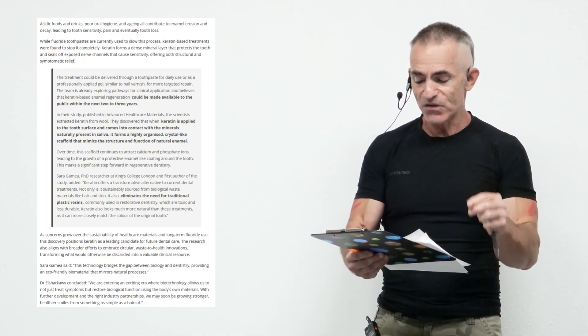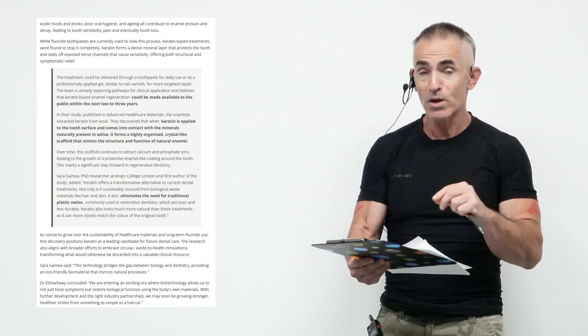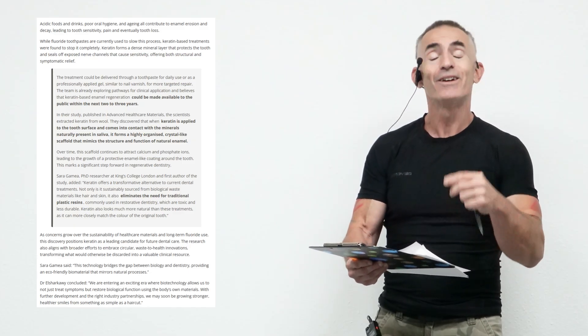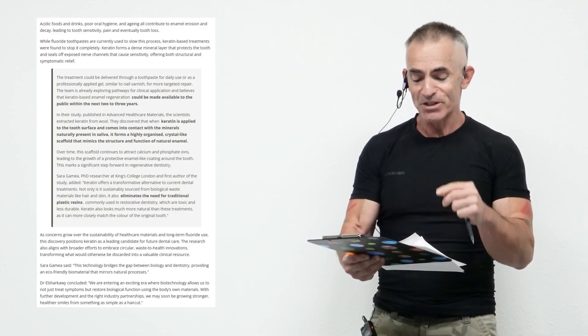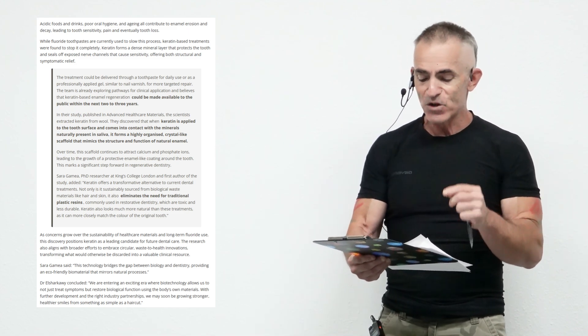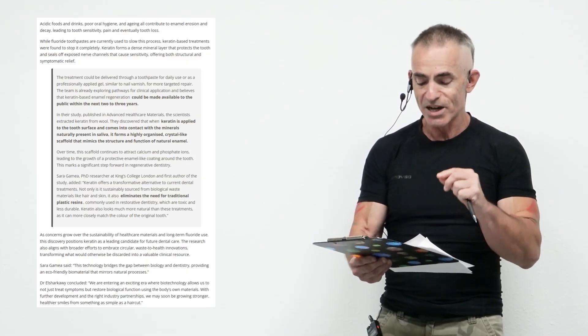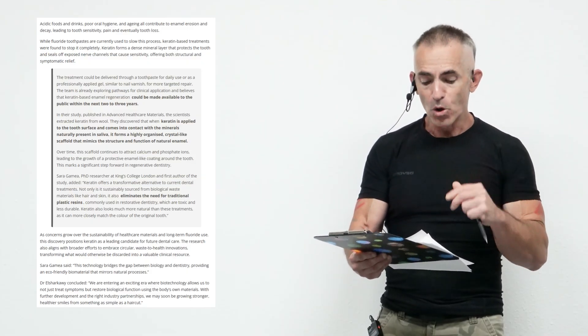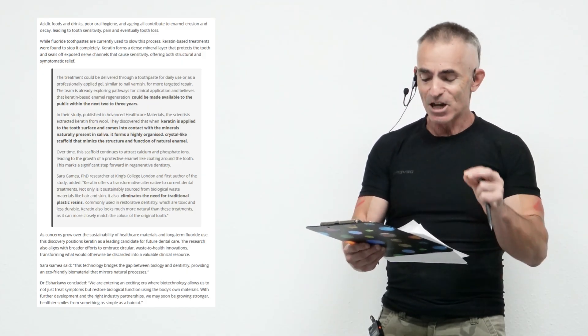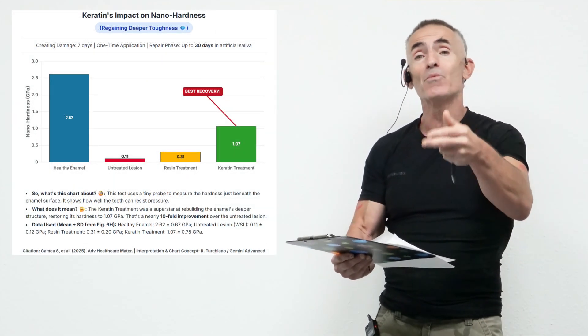The researcher said, quote, Keratin offers a transformative alternative to current dental treatments. Not only is it sustainably sourced from biological waste materials like hair and skin, it also eliminates the need for traditional plastic resins, commonly used in restorative dentistry, which are toxic and less durable. Keratin also looks much more natural in these treatments, as it could be more closely matched to the color of the original tooth. It looks natural as far as helping repair the enamel.